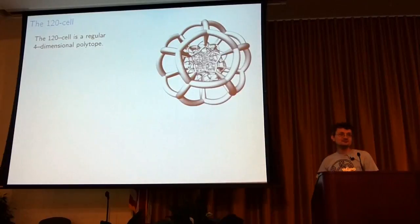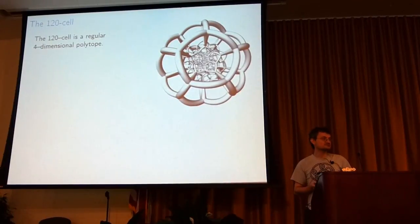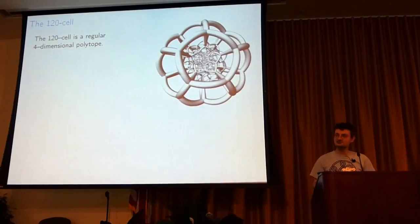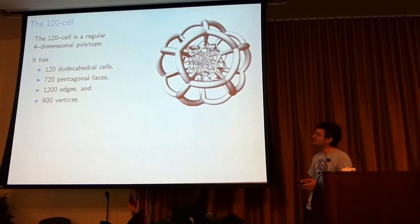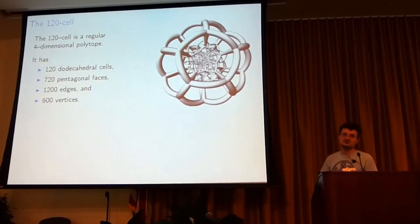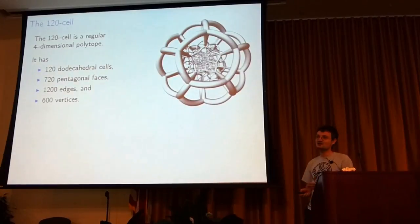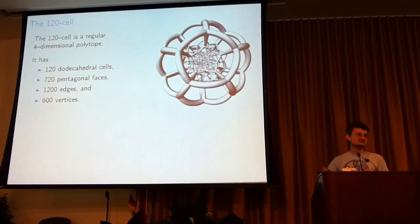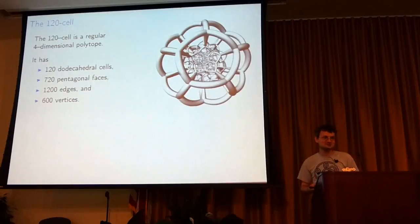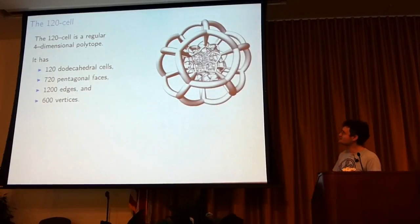So what's the 120-cell? It's one of the four-dimensional regular polytopes, the four-dimensional versions of three-dimensional regular polyhedra like the dodecahedron. And with analogy to regular polyhedra, the dodecahedron has as its faces regular pentagons. So the 120-cell has three-dimensional faces or cells. It has 120 dodecahedral cells, 720 pentagonal faces, and lots and lots of vertices and edges.